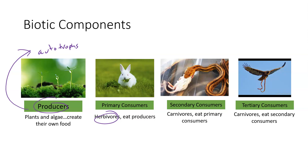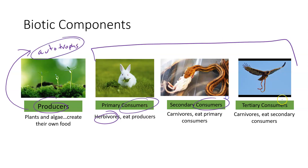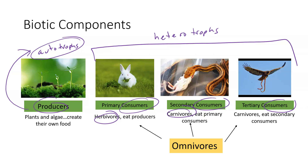Just as producers have the synonym autotrophs, our consumers of all types have a synonym: heterotrophs. So we have herbivores, which eat plants and algae, and carnivores, which eat other animals. We also have omnivores — organisms like humans — which don't fit into any one category. We tend to eat at several different trophic levels, sometimes eating producers like fruits, vegetables, and grains, and sometimes eating meat. Some of you may be vegetarian, which would make you an herbivore.